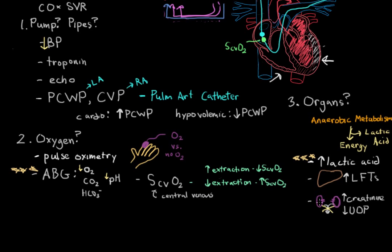And there's lots of other ways you can assess how the organs are functioning. For example, the brain. If a patient has confusion, then that could be a sign that their brain is starting to lose its oxygen supply.